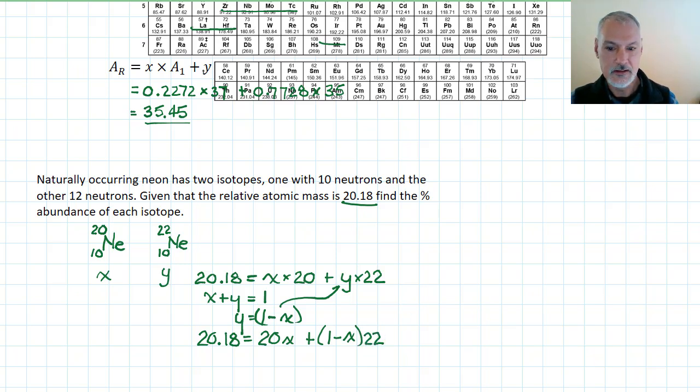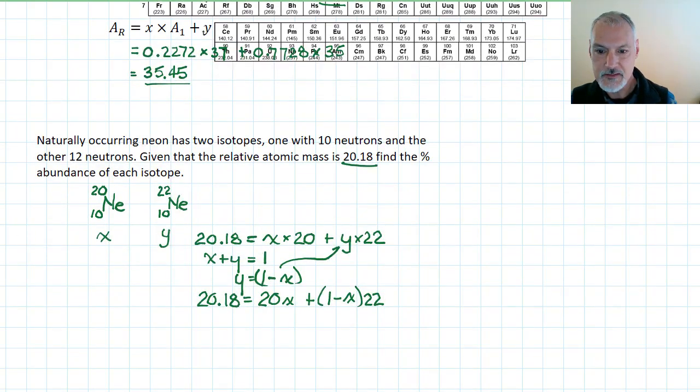We'll now take that and multiply it by both sides. So we'll take this term and expand it. So I now have 20x plus 22 minus 22x. Collecting my x terms on this side, I'll have minus 2x. And taking the 22 over to the other side and subtracting it from the 20.18 gives me minus 1.82. Solving then for x, I get 0.91.